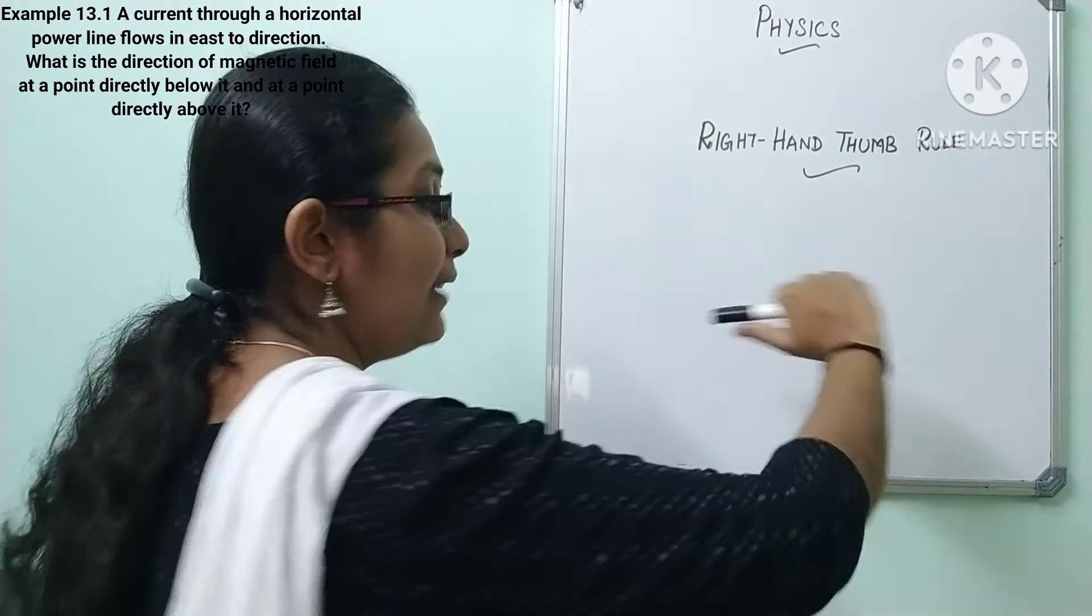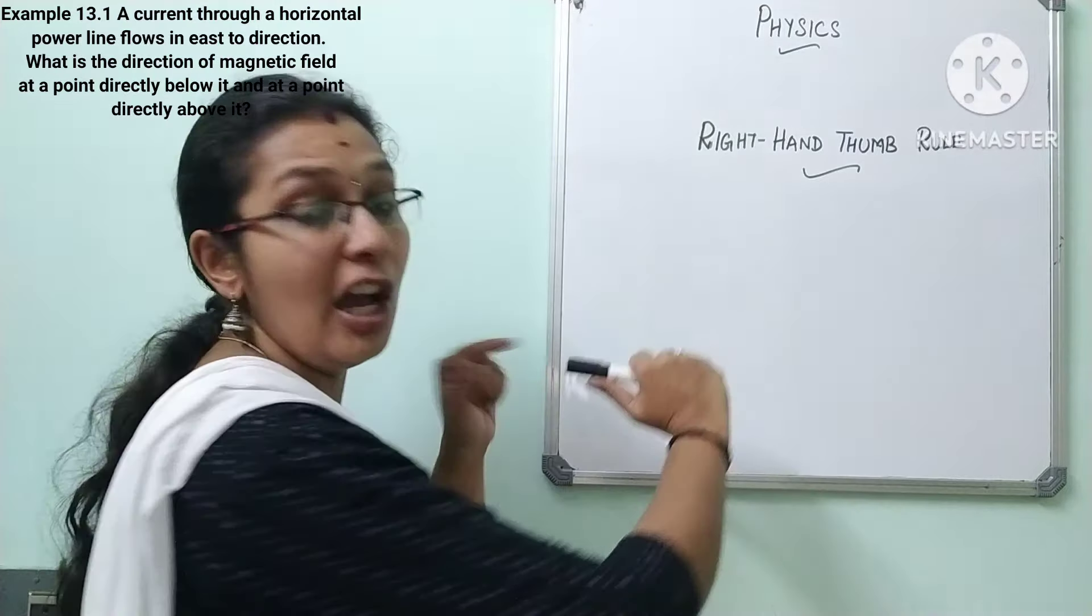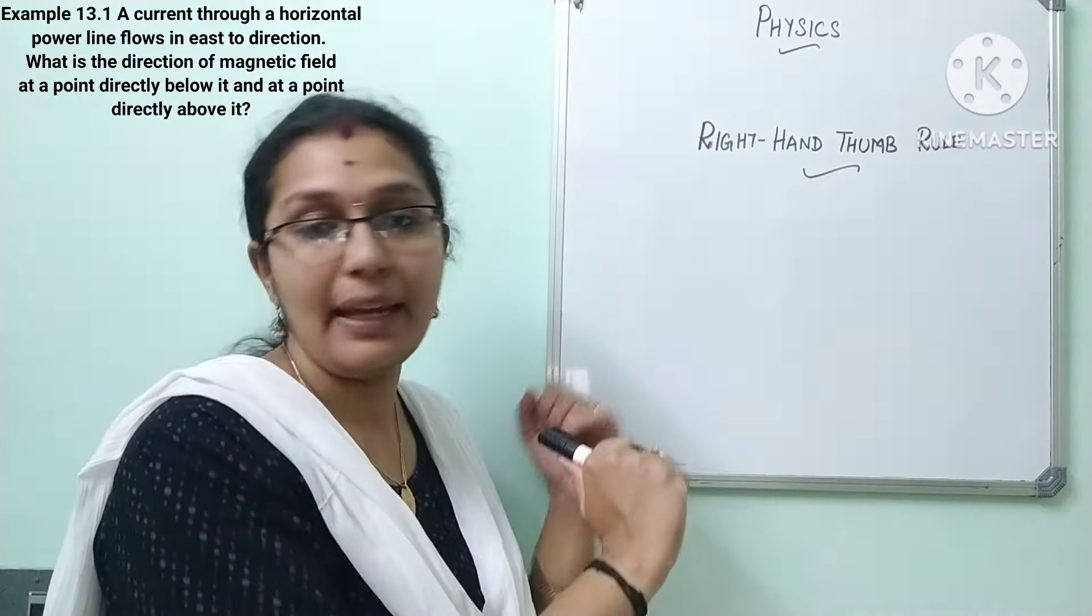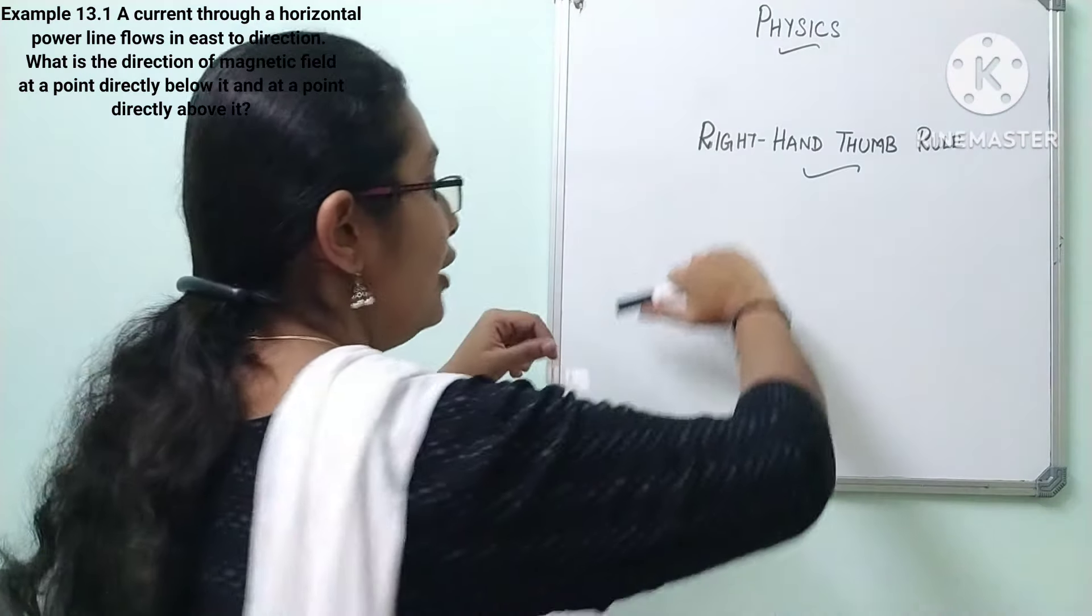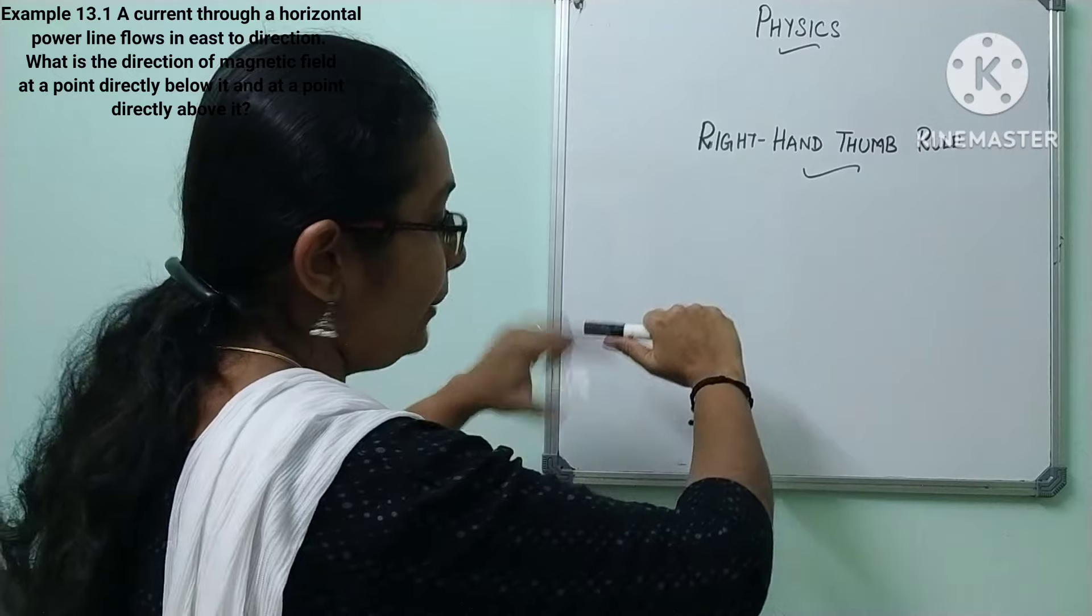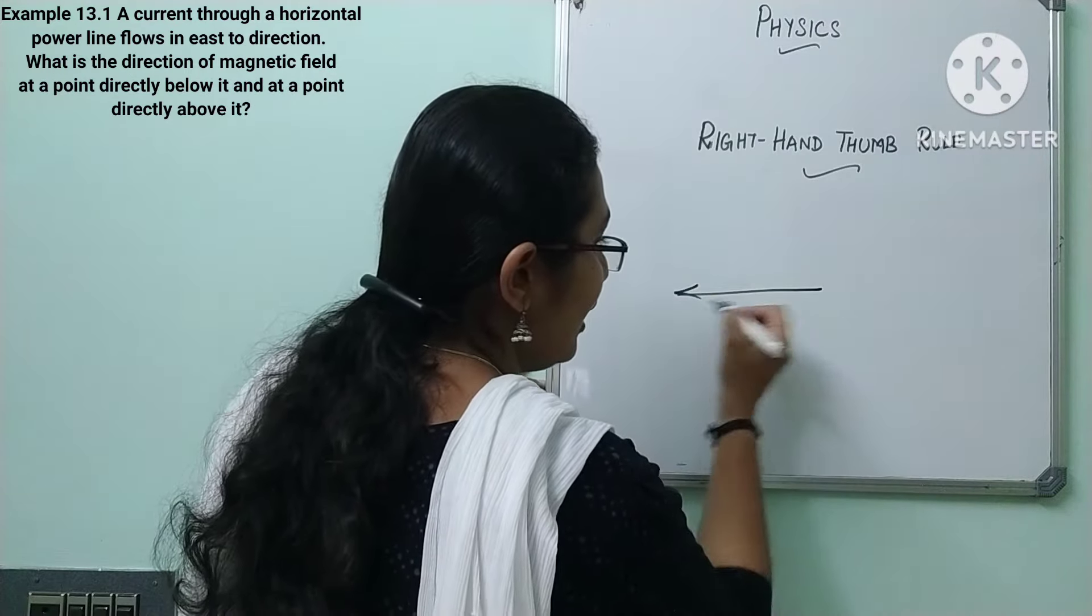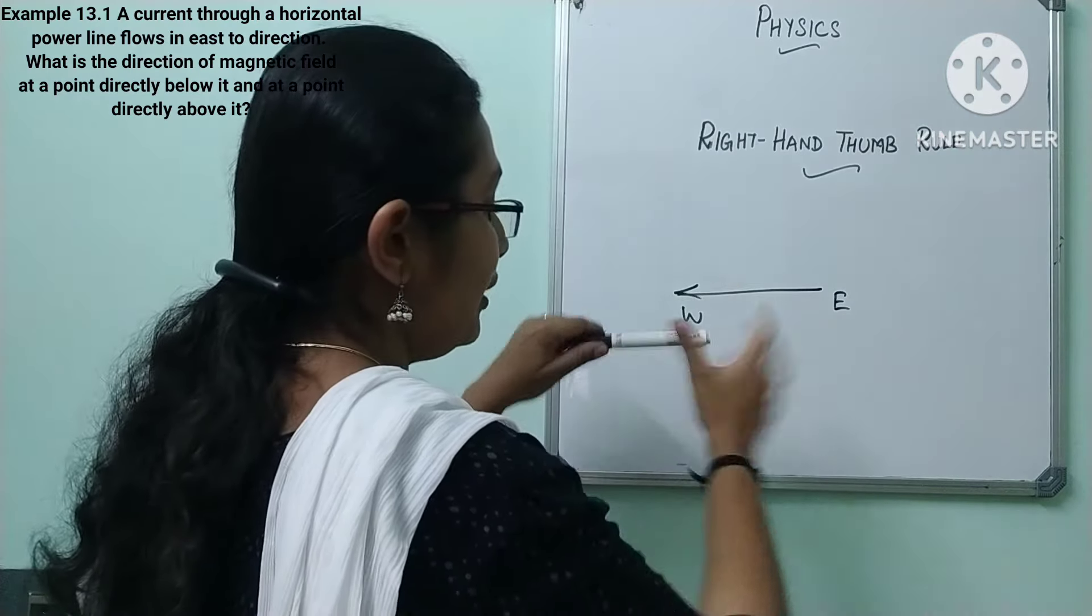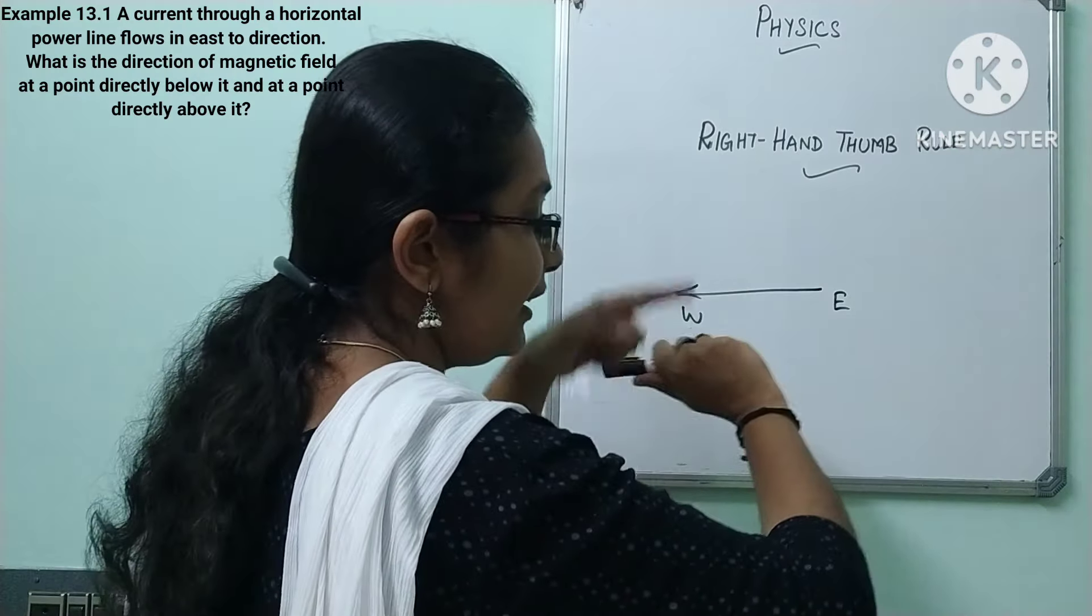So current direction they have given as flowing from east to west. What is the direction of magnetic lines of force at a point above it and below it they are asking. So let us consider a point above it and a point below it. Say your current is flowing from east to west and check for your fingers. It is curling like this.